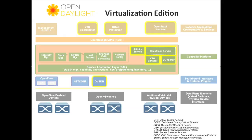The Virtualization Edition added OVSDB as a southbound — OVSDB is a way to configure and talk to OVS. We also added the Affinity Service, OpenStack integration, VTN Manager, and Dove Manager. VTN and Dove were different ways of doing data center multi-tenant virtualization — one from NEC, one from IBM. But I'll say right up front: these things didn't play nicely together. VTN and Dove both wanted to talk directly to the switching infrastructure, and there is no abstraction sitting between those. Affinity could have been that, but the Plexxi folks just didn't get to it. VTN and Dove could run over Affinity, but we just didn't get there.